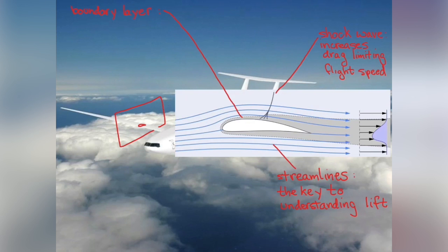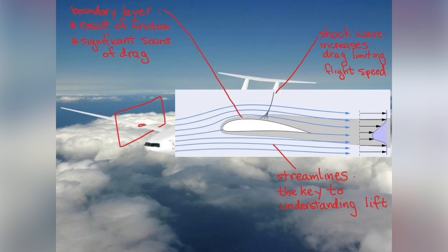Also in this image is the boundary layer. The boundary layer region is where friction forces act, and those friction forces cause a significant amount of the drag on an airplane.